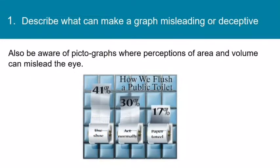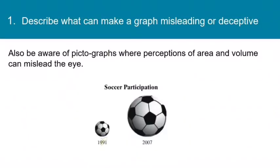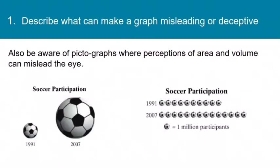Also, be aware of pictographs where perceptions of area and volume can mislead the eye. In one graph, we really don't know if the roll itself is part of the graph, or if the bars start at the top of the roll — it's just not clear. And in another graph, soccer participation in 1991 appears much smaller than participation in 2007, but with a 3D object, if you double the width and double the height, the eye perceives a difference of four times, not just two times. It might be better to use a symbol where each ball represents a certain number of participants.